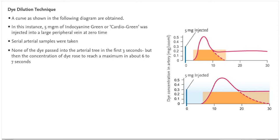None of the dye passed into the arterial tree in the first three seconds, but then the concentration of dye rose to reach a maximum in about six to seven seconds.